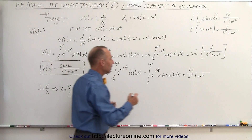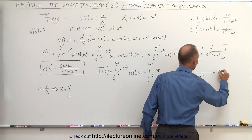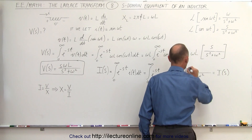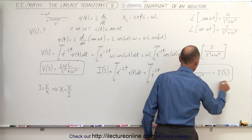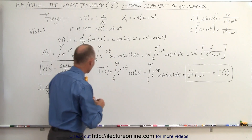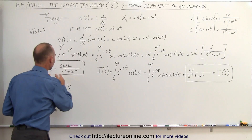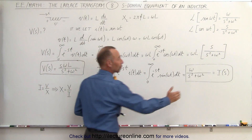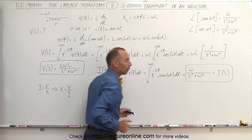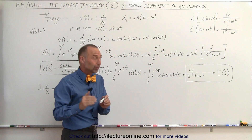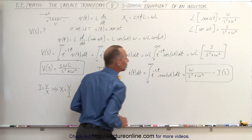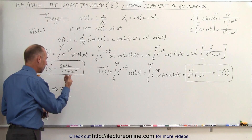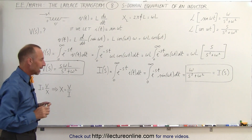So we have the voltage across the inductor in the frequency domain, and the current through the inductor in the frequency domain. What if we now take V divided by I and see what we get?